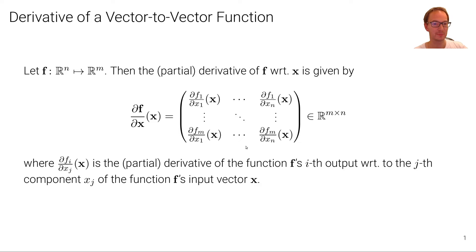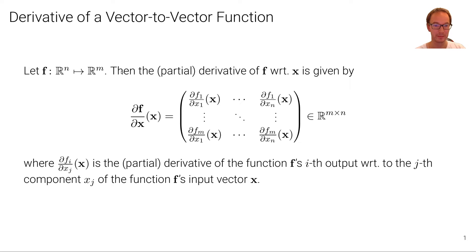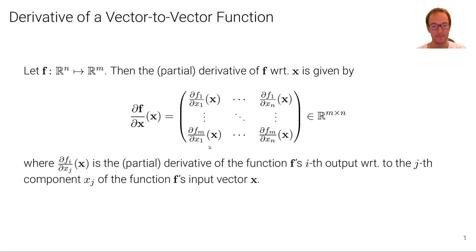Let's consider a function — we write this function in boldface notation because it has not only multivariate input but also a multidimensional output. So we have a function that maps in this case from R^n to R^m. The partial derivative of f with respect to x is given by a matrix, because both the input and the output are high dimensional. We write the derivative of f with respect to x evaluated at x as a matrix — in particular, this is an m times n matrix.